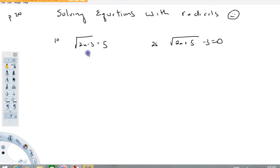So this first one here, square root of 2x minus 3 equals 5. When we're solving these things the first thing we have to do is get rid of this radical here and the way you get rid of a radical is by squaring both sides.